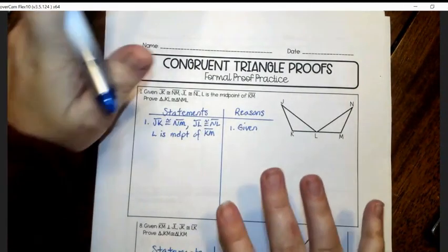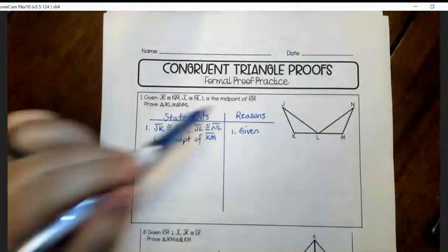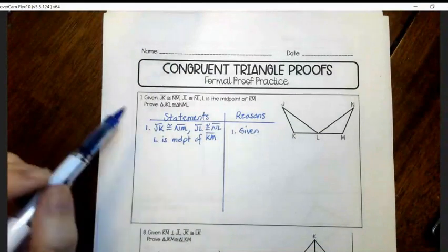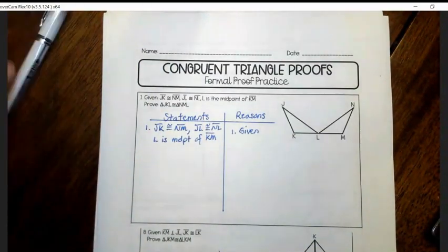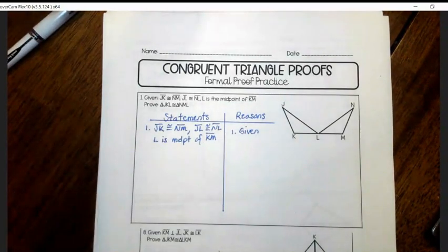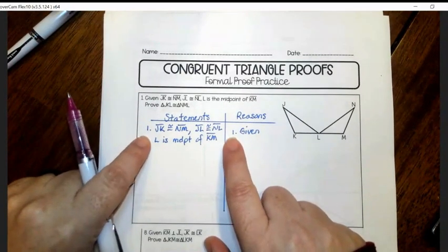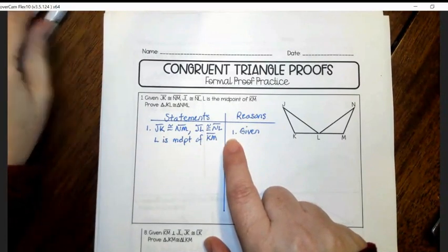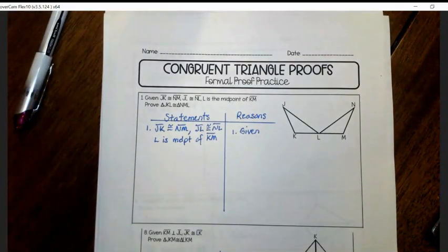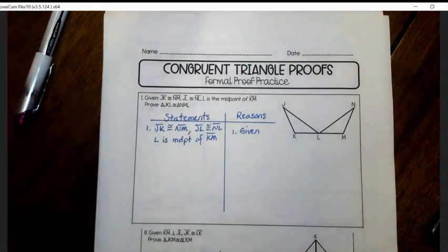So for these proofs, I've already filled in or made the T-chart and wrote statements, reasons, filled in the first step because I was trying to save some time. But you have to write statements, reasons at the top of each one of these two column proofs. You have to number the statement and the reasons so I know that this statement goes with this reason. And almost always the first step is going to be the given information.